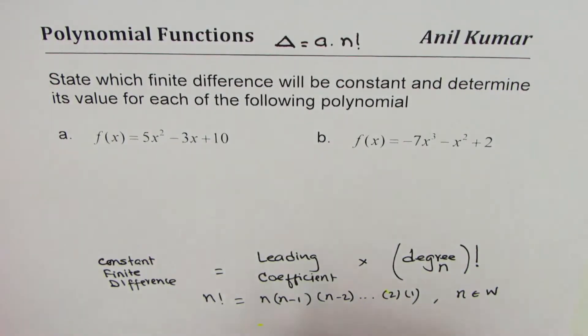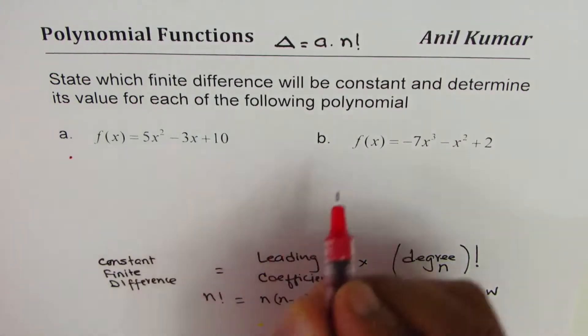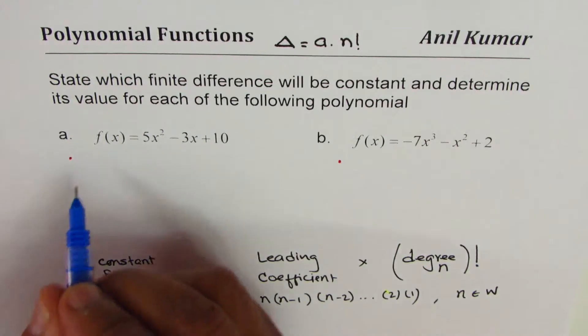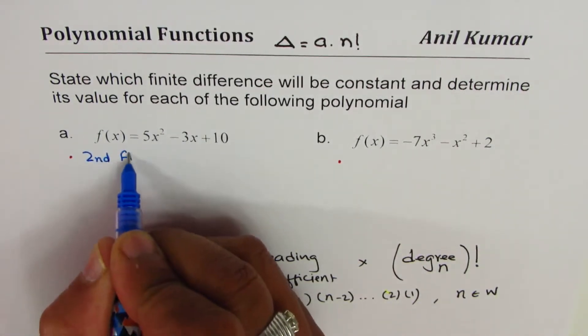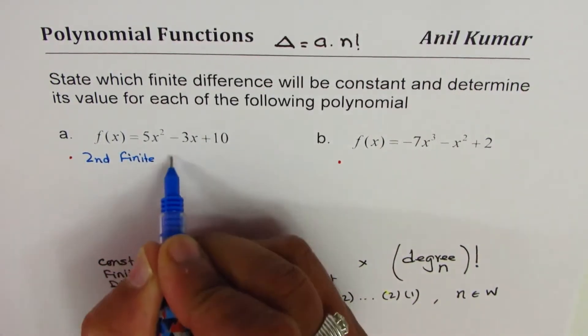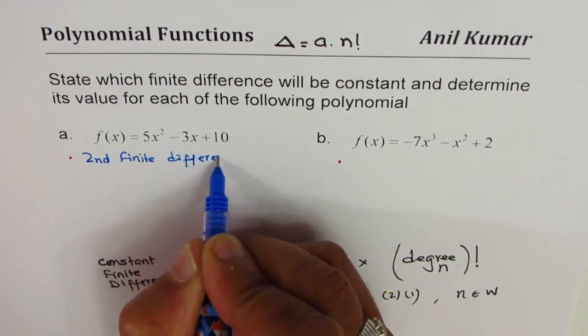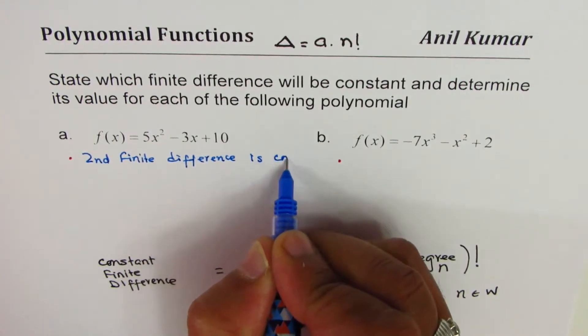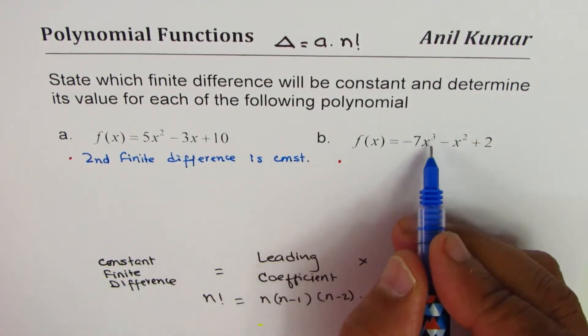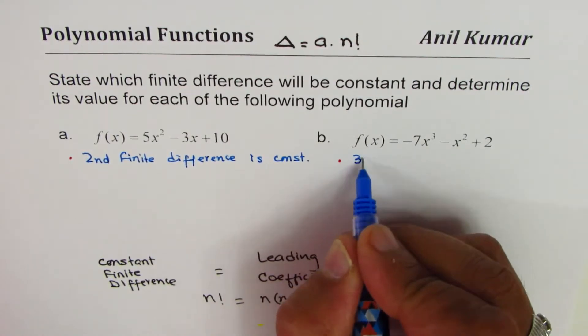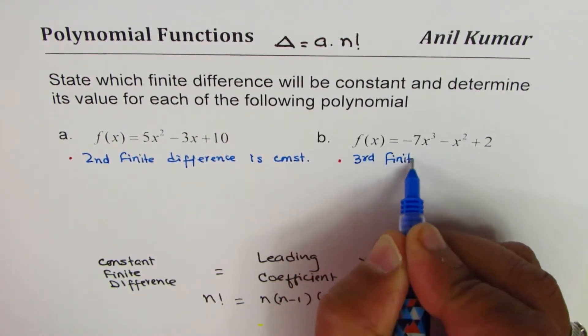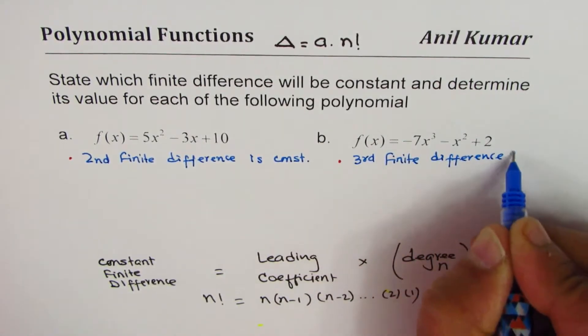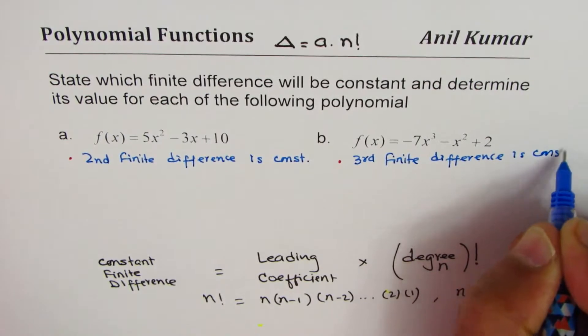So there are two parts. First one, which finite difference will be constant? Since the degree of this polynomial is 2, second finite difference is constant. In this case, degree is 3, so third.